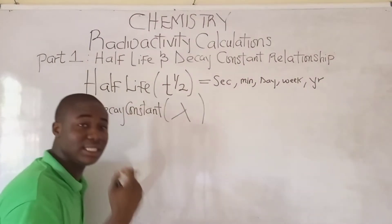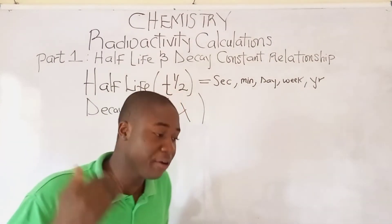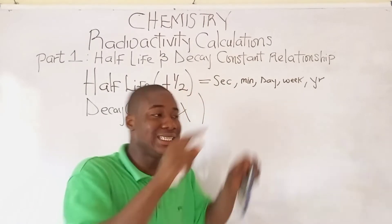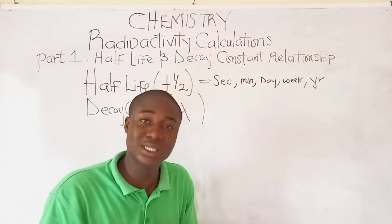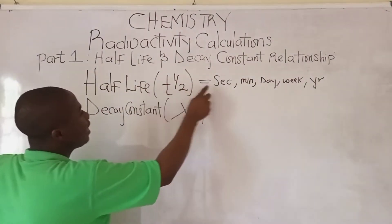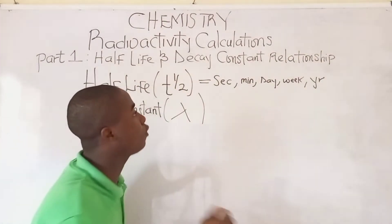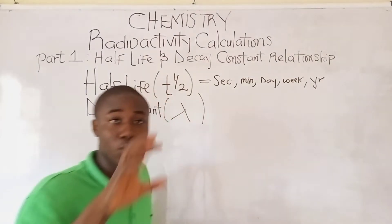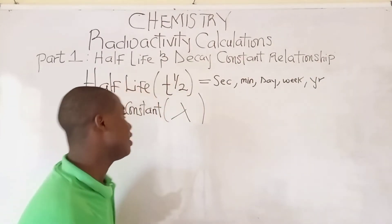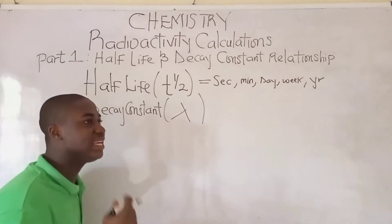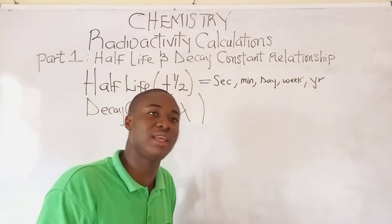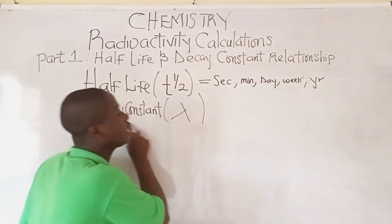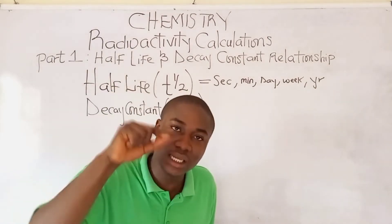What is the SI unit for decay constant? All of these things are very important when solving problems on radioactivity, so we can determine the half-life or the decay constant in the question. The decay constant SI unit is a function of the half-life. So before we know the correct SI unit for the decay constant — which is given with lambda — we need to know the SI unit for the half-life.